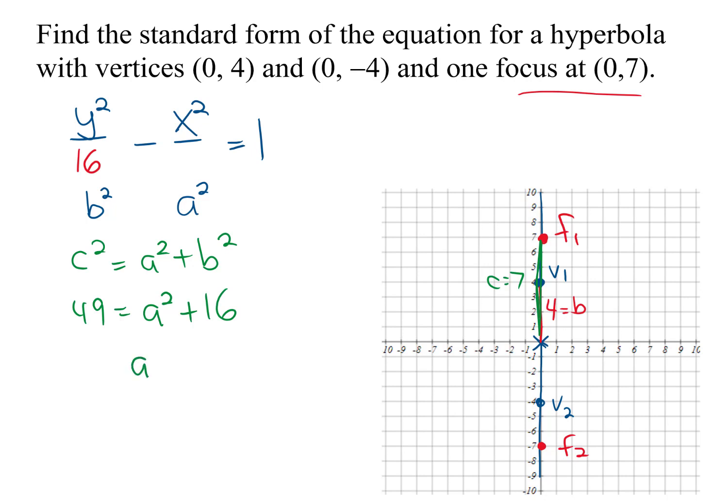So now I can solve this for a-squared. I'm going to take 16 from both sides, and it looks like that's going to be a-squared is going to be 33.